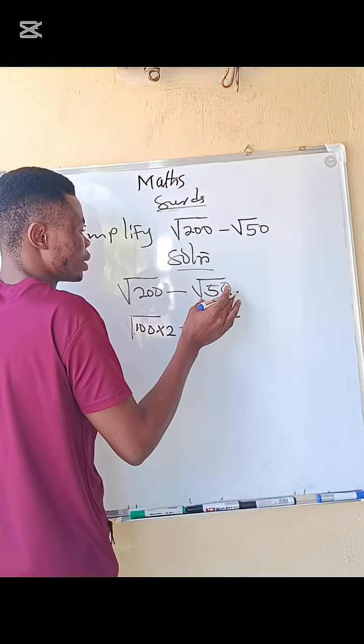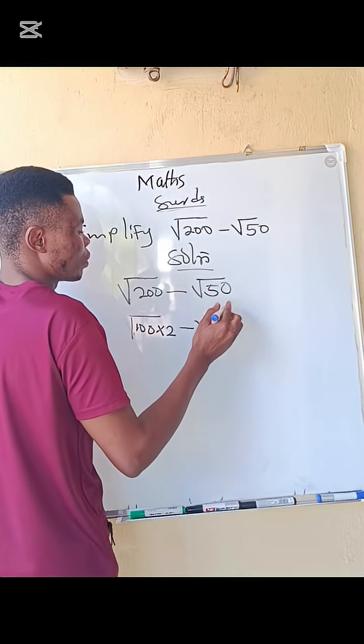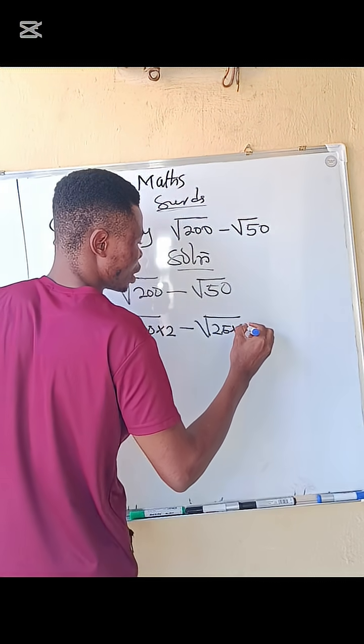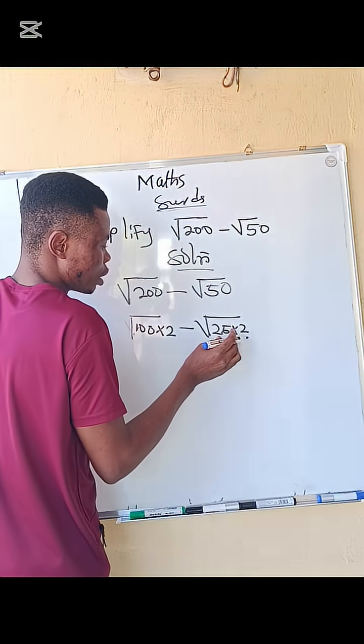If I say 25 times 2, 25 is the perfect square, 2 is not. So if I multiply these two, I'm going to have 50.